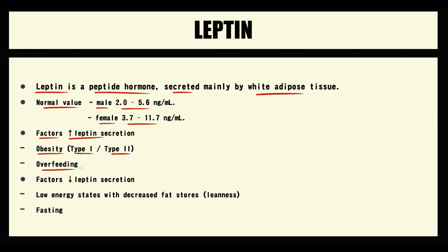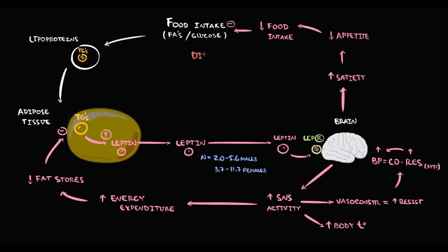Another factor that causes an increase in leptin level is overfeeding. With increasing consumption of food, the income of triacylglycerols into the adipose tissue increases. With increasing amount of triacylglycerols, leptin production increases, and as a result leptin level in the blood will increase.